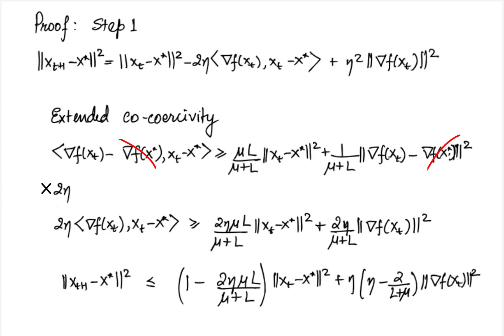Finally in this case we need to assume that eta is less than 2 by mu plus l so that the last term becomes negative and can be dropped.